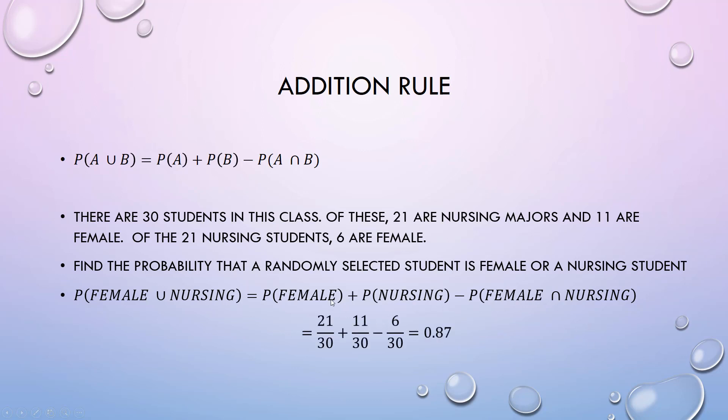Probability female - 11 out of 30 are female. Nursing major - 21 out of 30. And then we subtract the six that are both female and nursing out of the 30 to get our probability.